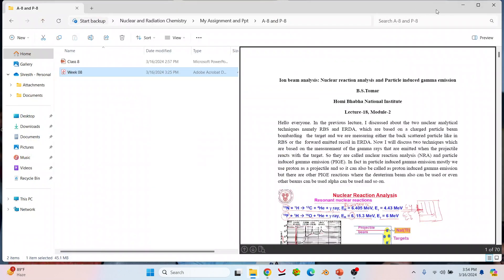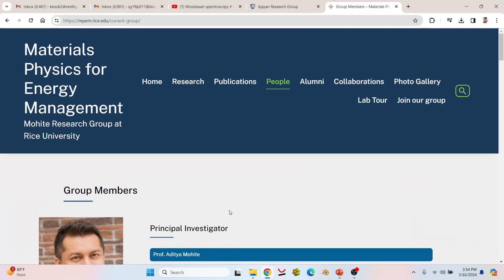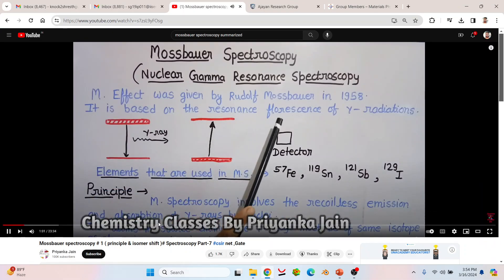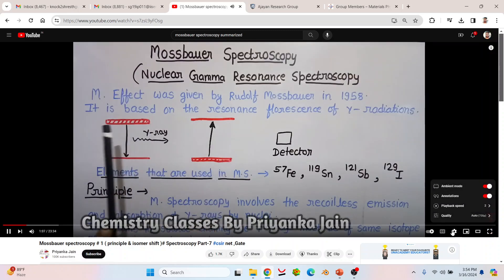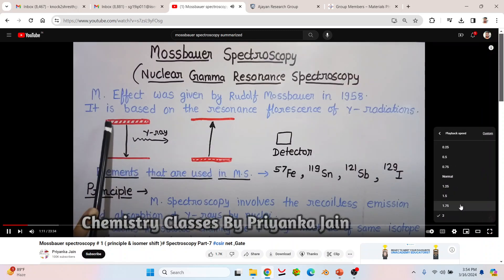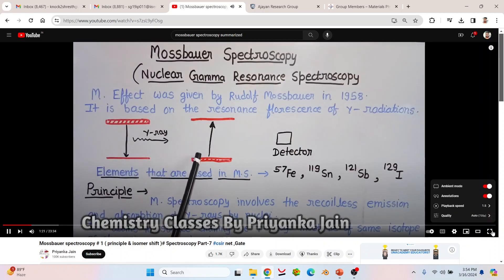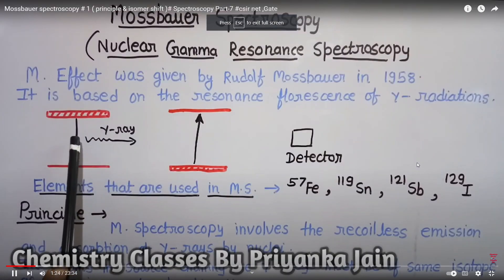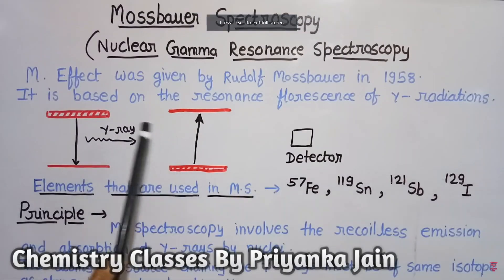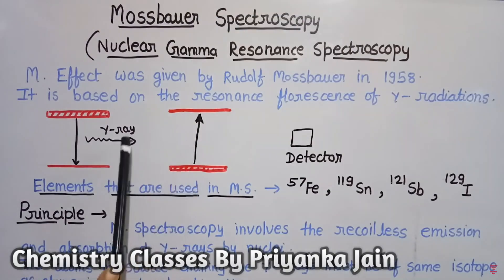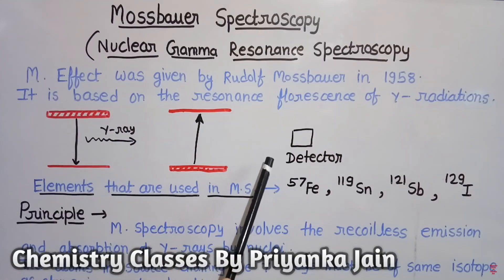Now a brief introduction to Mössbauer spectroscopy. Resonance fluorescence of gamma radiation: if there is an emitter which emits gamma rays going from the excited state to ground state, and here is an absorber possessing the same atoms that are present in the emitter, it can absorb this gamma ray and undergo the transition — it resonates. This absorption of gamma rays is detected by a detector. This is the basis of Mössbauer spectroscopy.